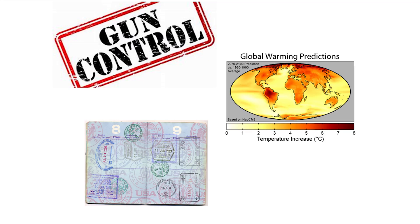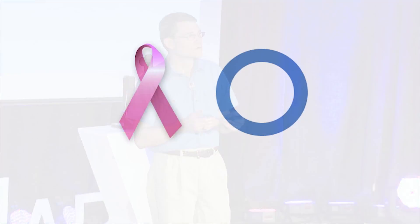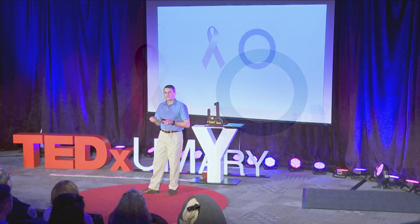From gun control to global warming to immigration law, people are taking up positions based on their opinion or opinions of others. Largely missing from these debates are facts, data, and some basic problem-solving methodologies. Would you feel comfortable depending on opinion to find a cure for cancer or for diabetes? If not, then why is opinion good enough to solve other problems?